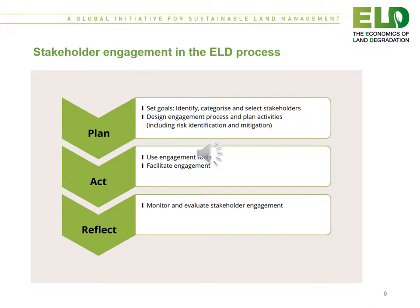The three steps of stakeholder engagement involve: first, planning — setting goals, identifying, categorizing and selecting stakeholders, and designing the engagement process and planning activities. Second, acting — using engagement tools and facilitating engagement. And third, the reflection phase, which monitors and evaluates stakeholder engagement.